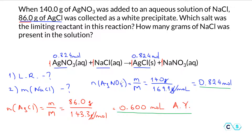So 0.600 moles formed, but we predicted 0.824 moles if silver nitrate was the limiting reactant. We have less than what we expected, which tells us that silver nitrate is in fact not the limiting reactant. So if it is not the limiting reactant, then sodium chloride has to be the limiting reactant and silver nitrate is in excess. The limiting reactant is sodium chloride.